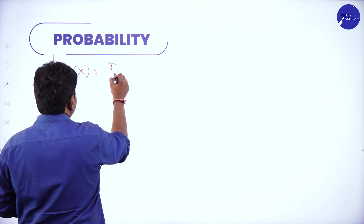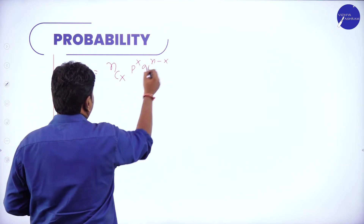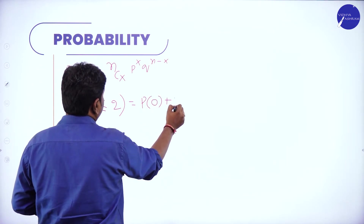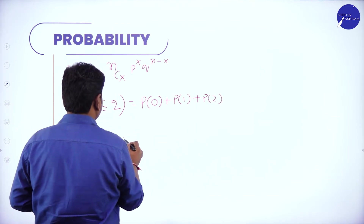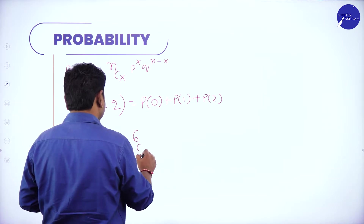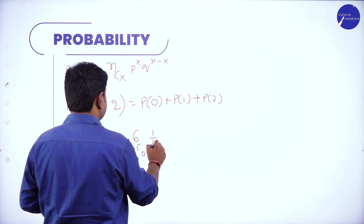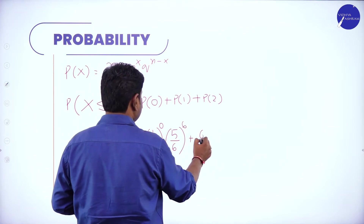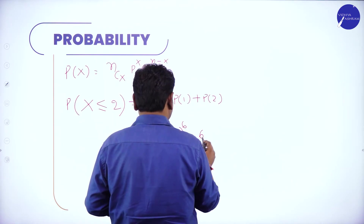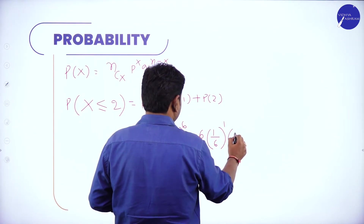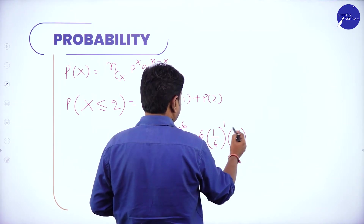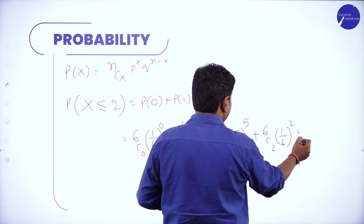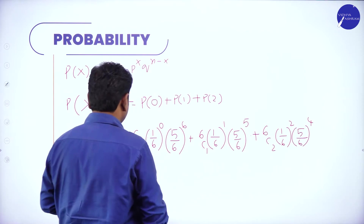Using the Bernoulli trial formula P(x) = nCx * p^x * q^(n−x), P(X ≤ 2) = P(0) + P(1) + P(2). P(0) = 6C0 * (1/6)^0 * (5/6)^6. P(1) = 6C1 * (1/6)^1 * (5/6)^5. P(2) = 6C2 * (1/6)^2 * (5/6)^4.